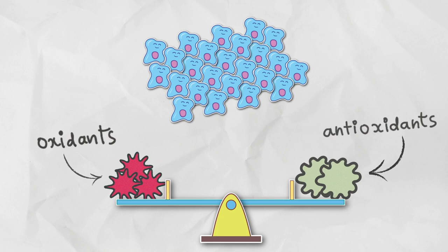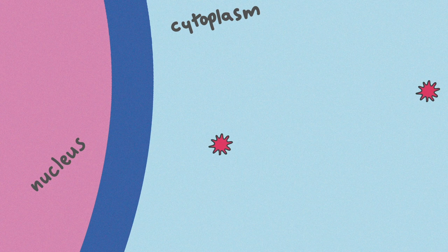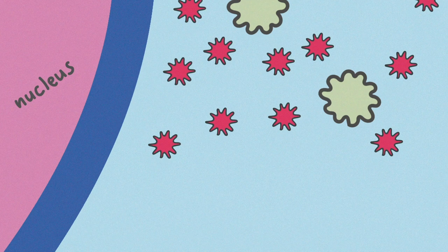Usually, the cell produces antioxidants to balance these oxidants. But sometimes, due to certain factors, the oxidants keep increasing and cannot be handled by antioxidants.